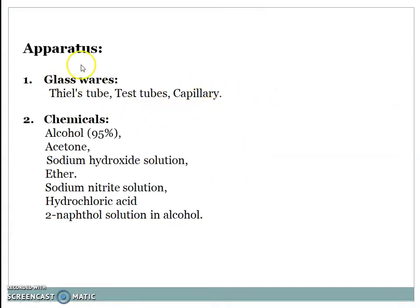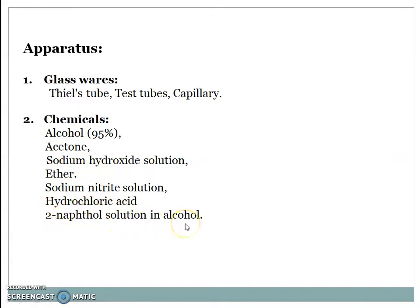Apparatus required for the practical include glassware: thiele tube, test tube, and capillary. Chemicals required include alcohol 95%, acetone, sodium hydroxide solution, ether, sodium nitrite solution, hydrochloric acid, and beta-naphthol solution in alcohol. Now let's move towards the laboratory for the actual step-wise procedure.